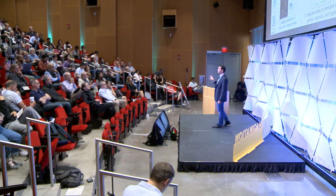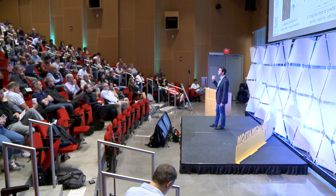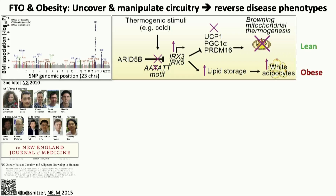Once we've integrated all this data, we then make predictions about what is driving the disease, and then we go and change these elements — we perturb them. The beauty of circuits is that you can then intervene. We did this, for example, for the strongest genetic association with obesity.